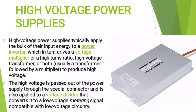High voltage power supplies typically apply the bulk of their input energy to a power inverter, which in turn drives a voltage multiplier or high turns-ratio, high voltage transformer, or both, to produce high voltage. The high voltage is passed out of the power supply through a special connector and applied to a voltage divider that converts it to a low voltage metering signal compatible with low voltage circuitry.